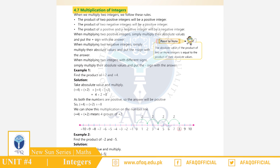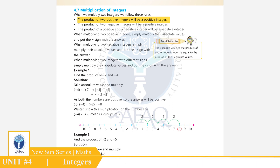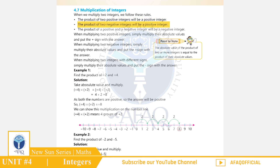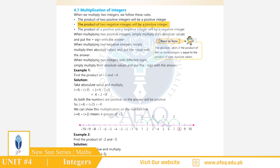Integers के Multiplication के Rules: Rule 1 - دو Positive Integers का Product हमेशा एक Positive Integer होगा। Rule 2 - دو Negative Integers का Product हमेशा एक Positive Integer होगा।